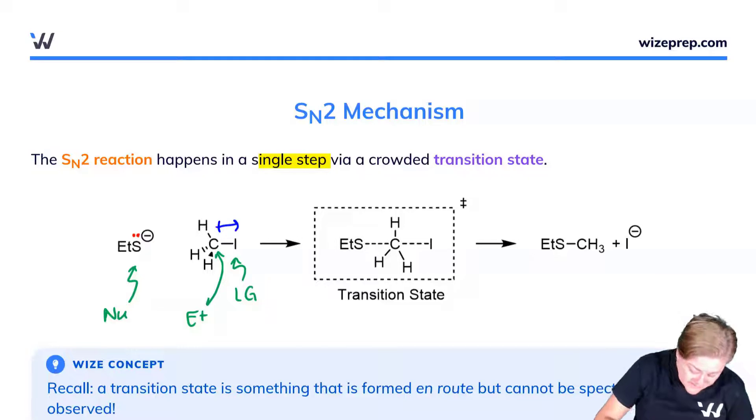Which is to say that the sulfur will attack the carbon, and when I make a bond to a carbon, I have to break a bond to a carbon. The I minus will depart. I make a transition state, which is indicated with this little double dagger that says that something's a transition state.